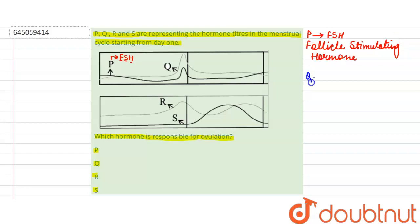Now the second labeling, which is Q, shows the varying level of luteinizing hormone, which is LH. This luteinizing hormone reaches its peak on day 14 of the menstrual cycle.